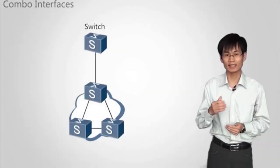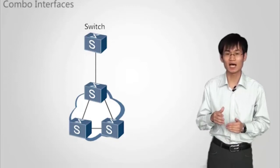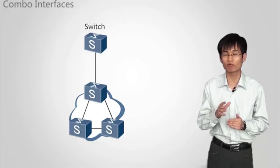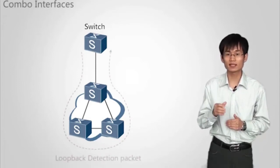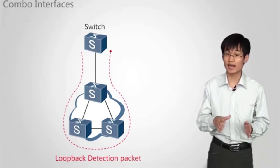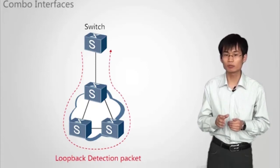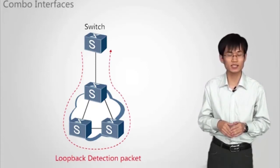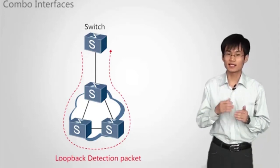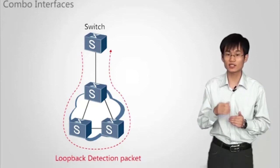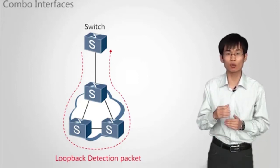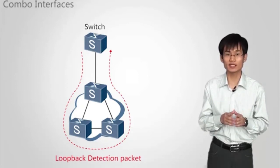Loopback detection is used to detect loops on the Internet. After the loopback detection function is enabled on the switch, the switch periodically detects loops on each Ethernet interface. The interface that enables loopback detection sends a loopback detection packet every 5 minutes by default. If the loopback detection packet is sent back to the interface, it indicates a loopback on the interface. That is, a loop occurs on the network connected to the interface. The interface then switches to the loopback detection state. The interface automatically restores previous status after three detection intervals.